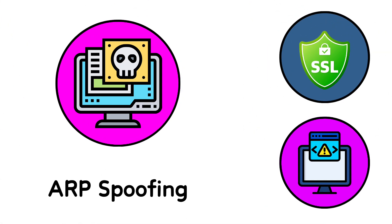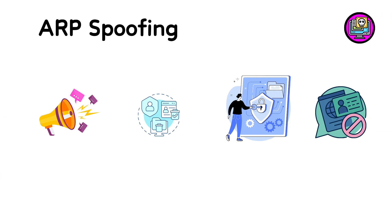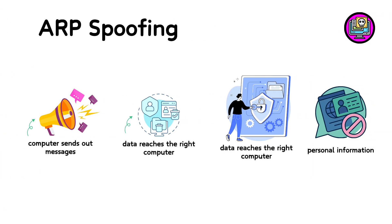3. ARP Spoofing. ARP spoofing is like sending fake address labels in a huge apartment building. Normally, your computer sends out messages asking, 'Who lives at this address?' to make sure data reaches the right computer on a network. In ARP spoofing, a hacker responds with 'It's me,' even if it's not true. This tricks your computer into sending your personal information to the hacker instead.